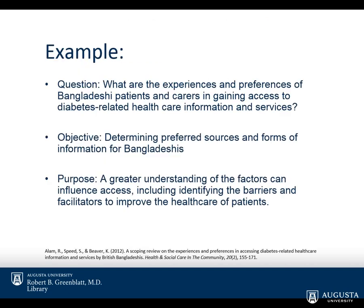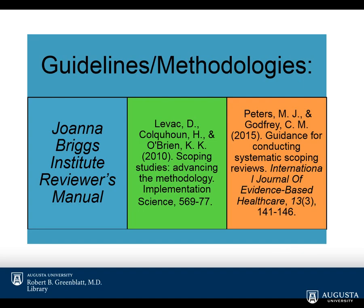Here is a great example from a real scoping review published in 2012, showing a research question that fits the PCC format, one of the clear objectives, and the outlined purpose for publishing the scoping review. For guidelines and methodologies, the most well-known is the one published by the Joanna Briggs Institute. They currently have a 2017 version available — if you Google 'Joanna Briggs scoping review methodology' it will pull up the PDF for the 2015 version. There are also a couple of other published methodologies available through the library's databases.